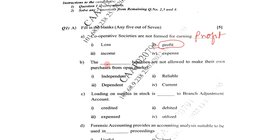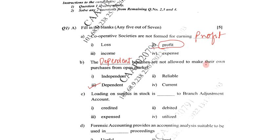Next question: The dash branches are not allowed to make their own purchases from the open market. Options are independent, reliable, dependent, current. The correct answer is dependent. The dependent branches are not allowed to make their own purchases from the open market.